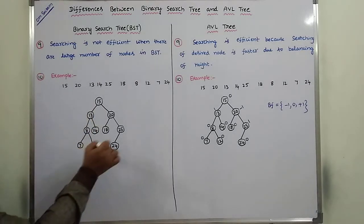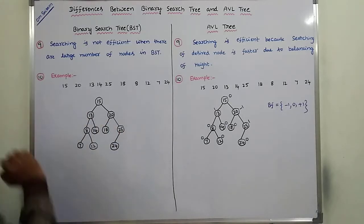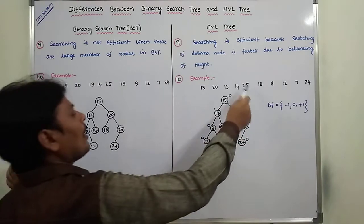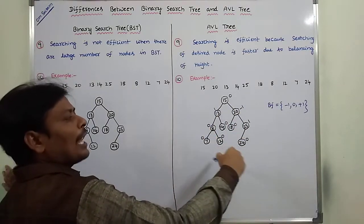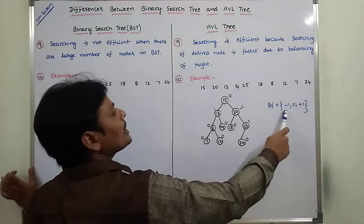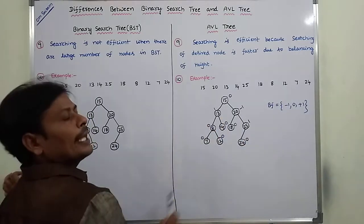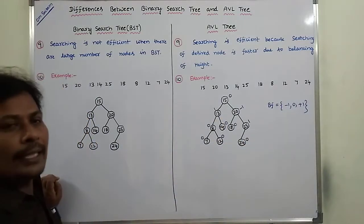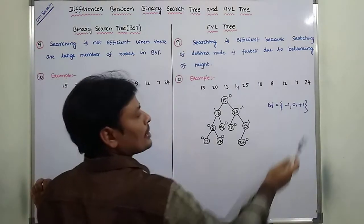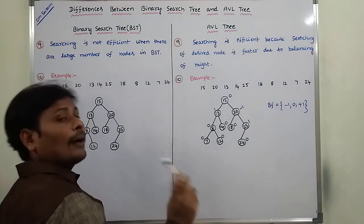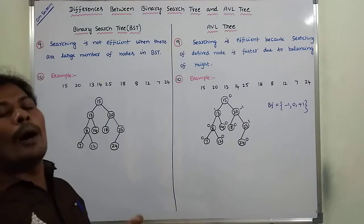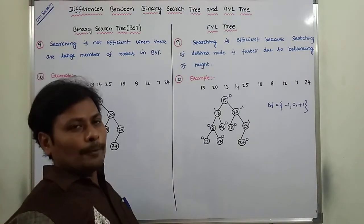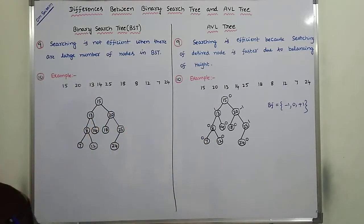This is an example of a binary search tree with inserted elements. The same elements are also inserted into the AVL tree. In the AVL tree, the balance factors for each node are either -1, 0, or +1, so the height is balanced. If any node's balance factor values are not satisfied, we modify the height of the tree using rotations. This is the description of the differences between binary search tree and AVL tree.